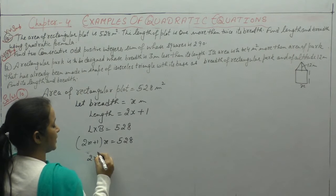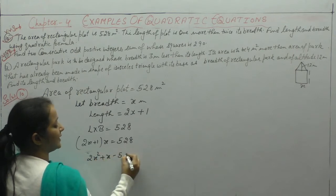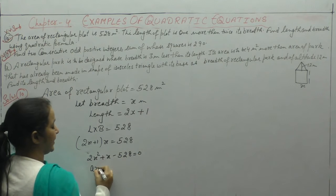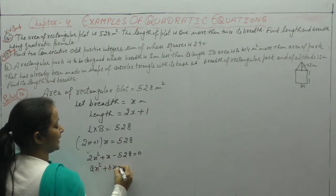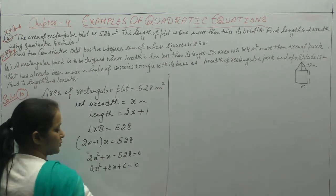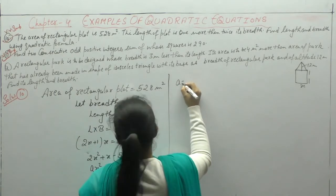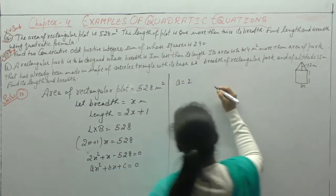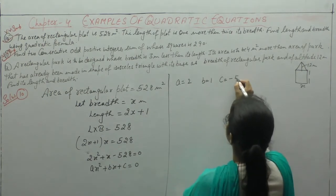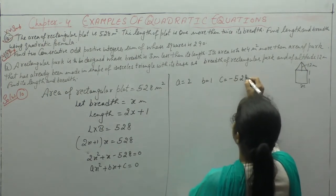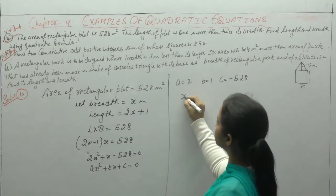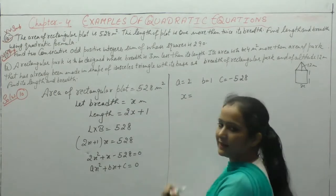So we get 2x² + x = 528, which gives 2x² + x - 528 = 0. Compare it with the general equation ax² + bx + c = 0: a is 2, b is 1, c is minus 528. Now we find the values using the quadratic formula.